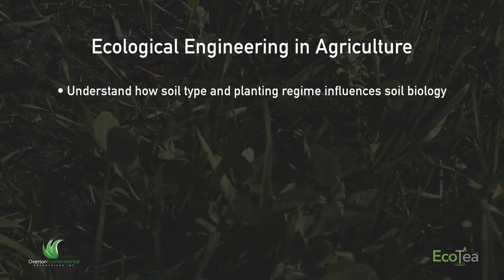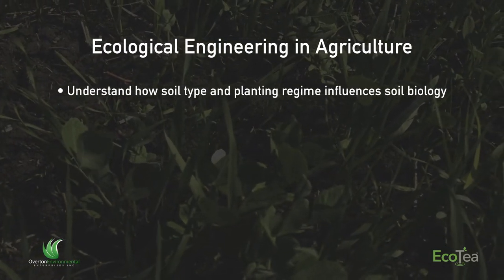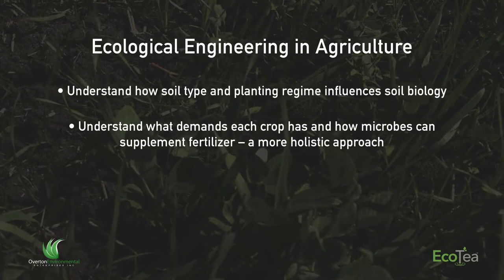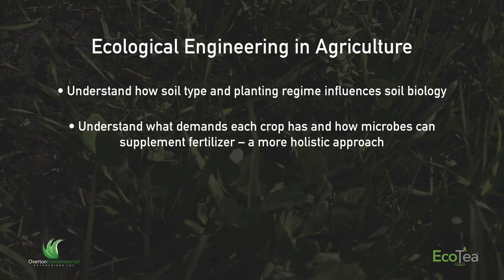We have a system, we know that it's crashed, and we want to bring it back to a healthy point. We have to now be ecological engineers — we have to engineer our soils back into a position where we can get really healthy crops. We can understand how soil types and planting regimes influence biology. Rhizobium is a great example: you don't want to plant peas into a field you've been monocropping corn in for 20 years, because your soil won't have the rhizobium organism that's very important for a legume to mineralize nitrogen from the atmosphere.